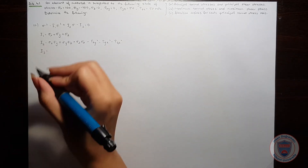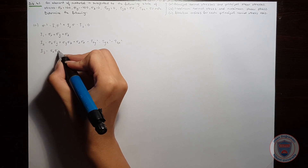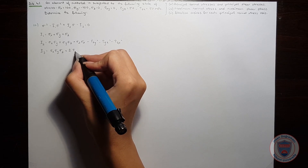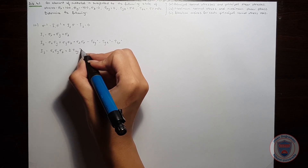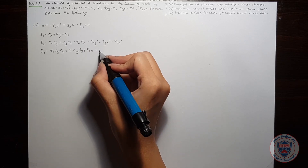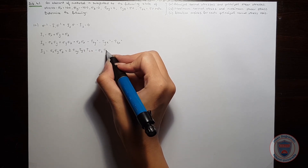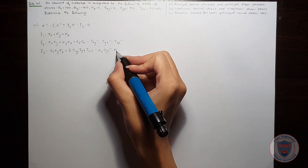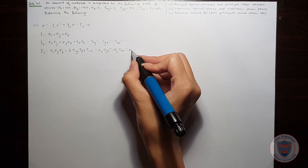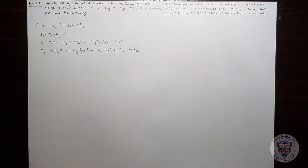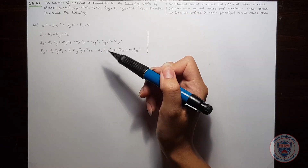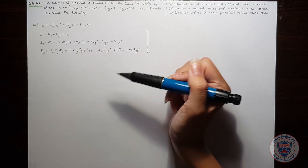I3 is equal to sigma_x times sigma_y times sigma_z plus two times tau_xy times tau_yz times tau_zx, minus sigma_x times tau_yz squared minus sigma_y times tau_zx squared minus sigma_z times tau_xy squared. When we substitute the stress values into these equations,